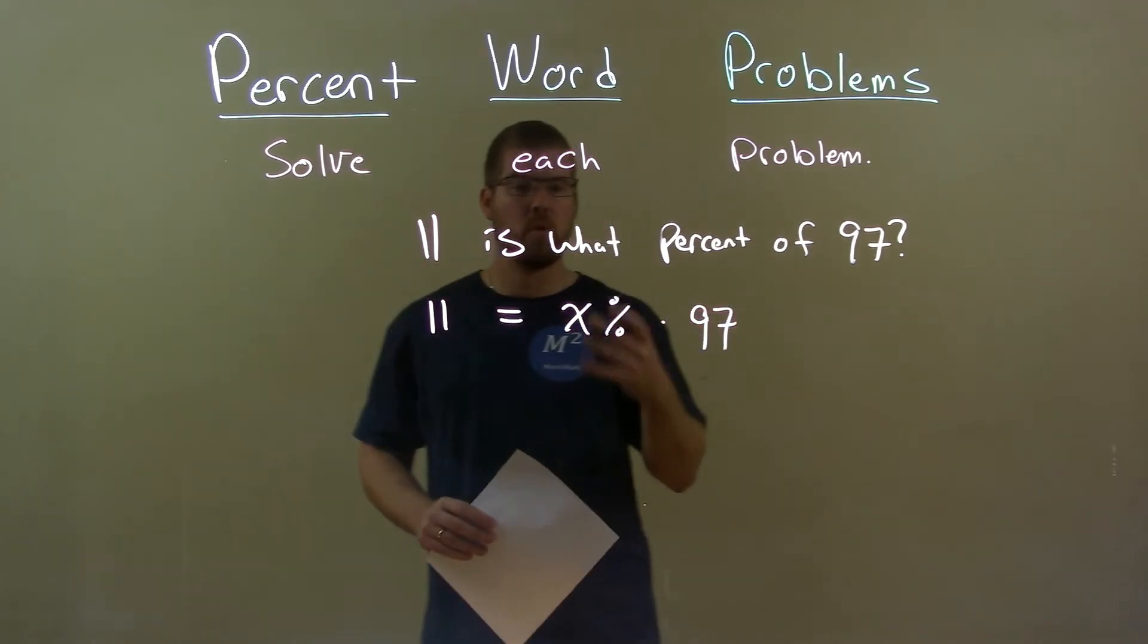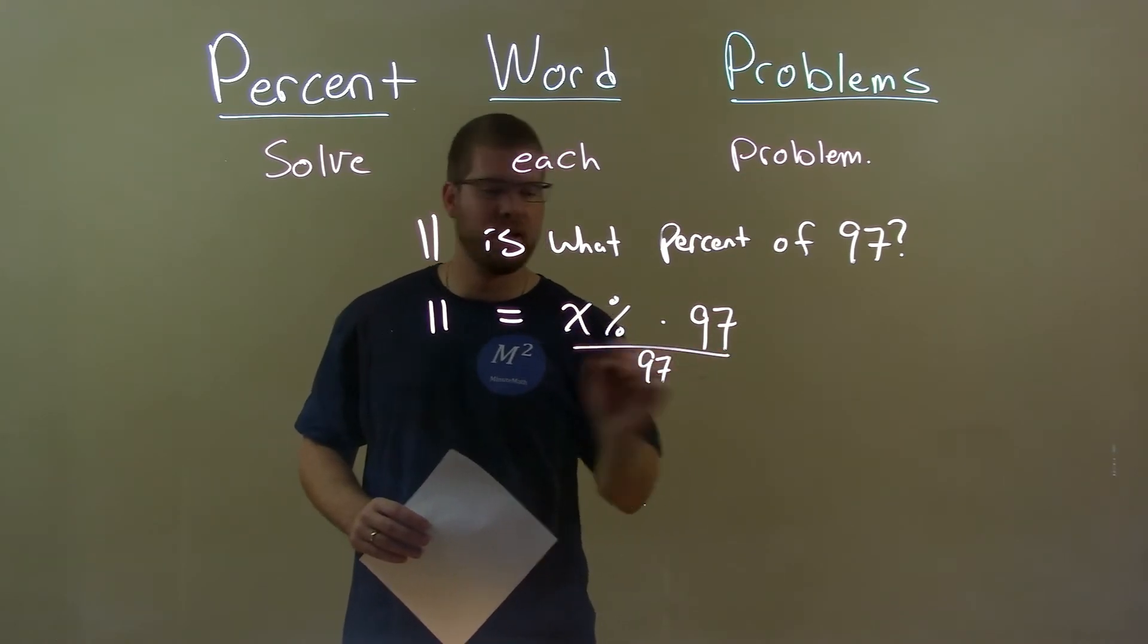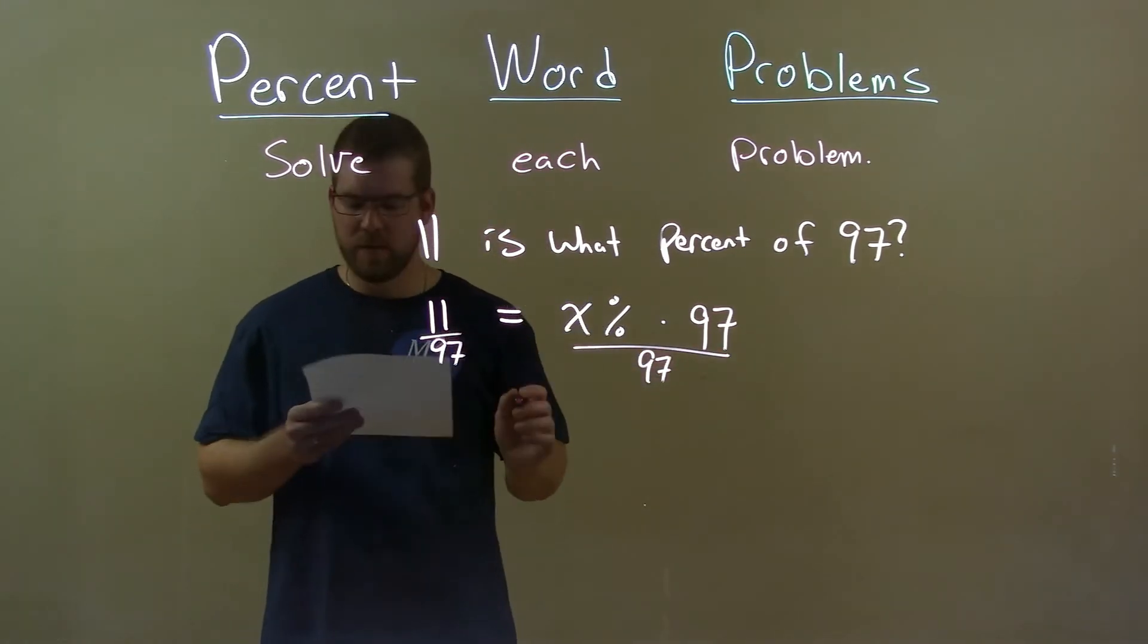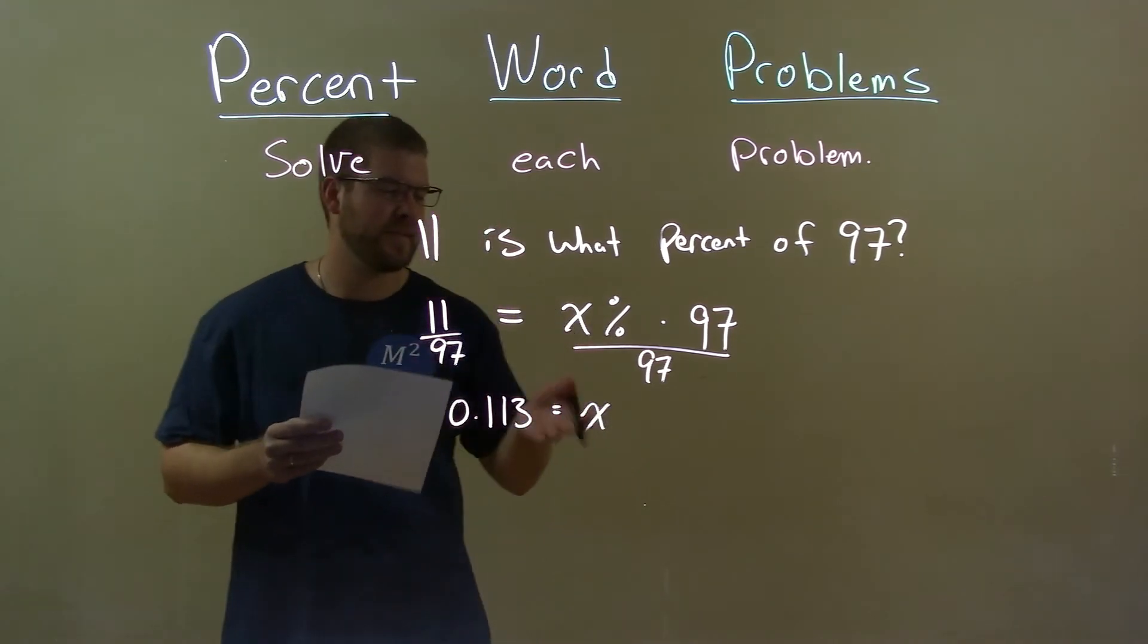Well now we have to solve for x. Opposite of multiplication, division, divided by 97 to both sides, and we get the decimal 0.113, and that's equal to x. It's not a percent yet.